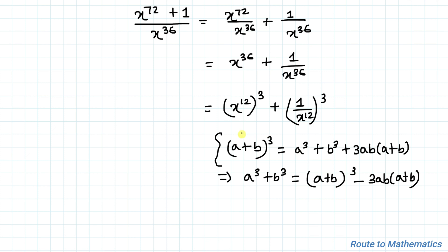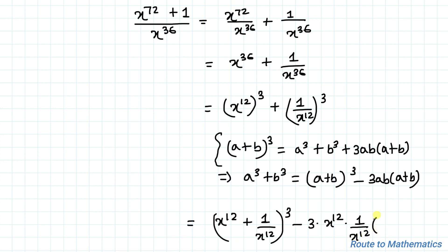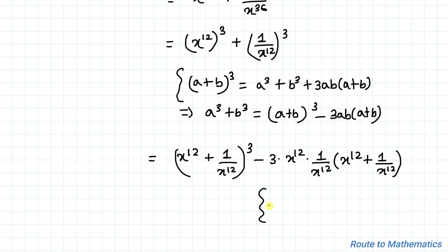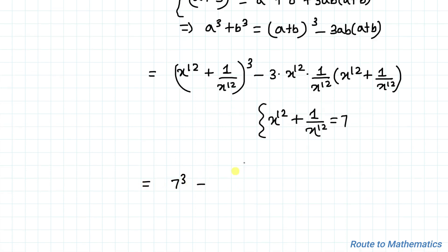Applying this identity with a as x to the power 12 and b as 1 by x to the power 12, we get: x to the power 12 plus 1 by x to the power 12 whole cubed, minus 3 multiplied by x to the power 12 multiplied by 1 by x to the power 12, multiplied by x to the power 12 plus 1 by x to the power 12. From equation 1, x to the power 12 plus 1 by x to the power 12 equals 7, so we substitute: 7 cubed minus 3 times 7, since x to the power 12 and 1 by x to the power 12 cancel out.